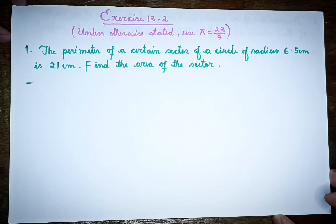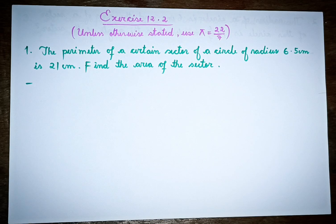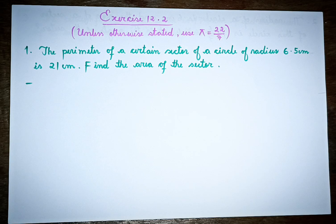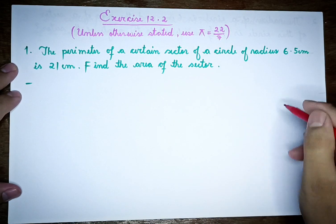Today we are going to talk about exercise 12.2. The perimeter of a certain sector of a circle of radius 6.5 cm is 21 cm. Find the area of the sector.